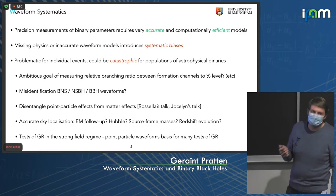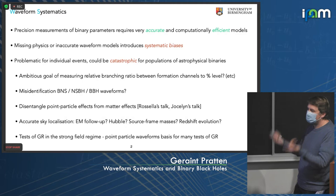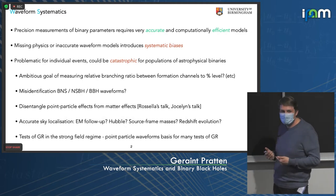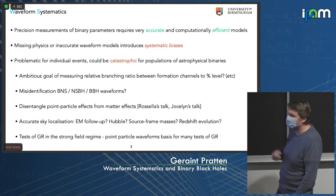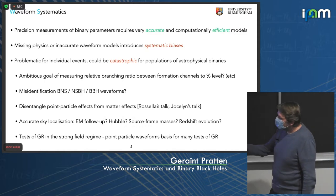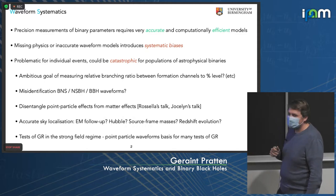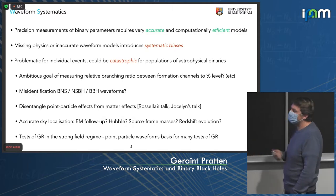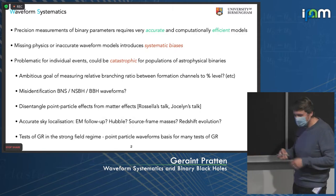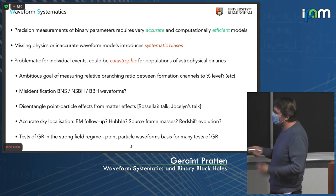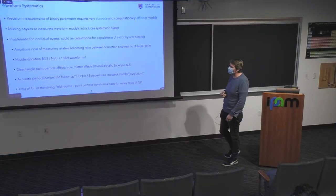Source frame masses are another subtle consideration. We need accurate luminosity distances so we can map back to source frame masses to really understand astrophysical populations. If you start biasing the luminosity distance, you start biasing your inference of your population. And as Patricia mentioned, we have tests of general relativity — point particle waveforms are typically a basis for many tests of GR, so any discrepancies in your waveform modeling will feed back into your inference about violations of general relativity.